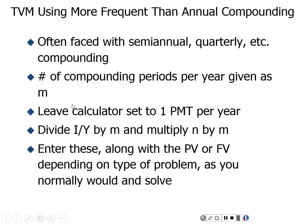We're going to leave the calculator set to either one payment per year or 12 payments per year, nothing else. If we have semi-annual compounding — meaning interest is compounded two times per year — or quarterly compounding — four times per year — we simply make the changes manually and enter them into our calculator, solving it just like we've been doing. It's not much different than what we've been doing all along.